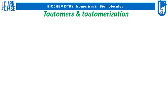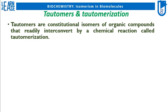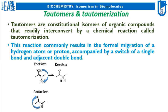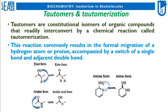Now I will explain the concept of tautomers and tautomerization. Tautomers are constitutional isomers of organic compounds that readily interconvert by a chemical reaction called tautomerization. This reaction commonly results in the formal migration of a hydrogen atom or proton, accompanied by a switch of a single bond and adjacent double bond. In the image, the proton resonating within the same molecule is shown; when the proton resonates, the position of the double bond also resonates. Examples shown include keto-enol tautomerization, amide-imidic acid tautomerization, and amine-imine tautomerization.